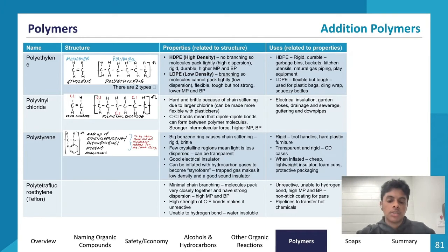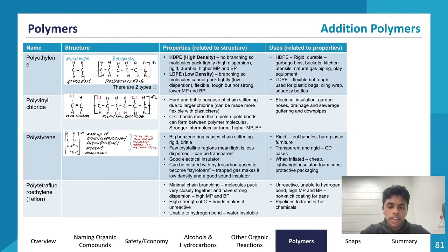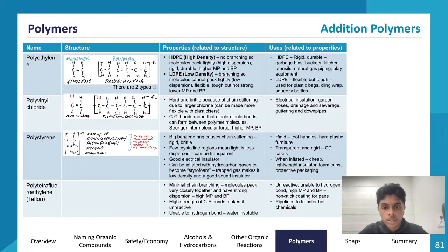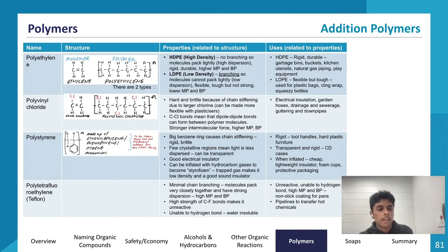Polyvinyl chloride, or PVC, is hard and brittle because of chain stiffening due to large chlorine atoms. It can be made more flexible with the presence of plasticizers. The C-Cl bonds can degrade in UV light, so UV blockers are added to make it more resistant to UV light. The C-Cl bonds allow dipole-dipole bonds to form between polymer molecules, giving it strong intermolecular forces, a higher melting point, and uses in electrical insulation, garden hoses, drainage, sewerage guttering, and downpipes.